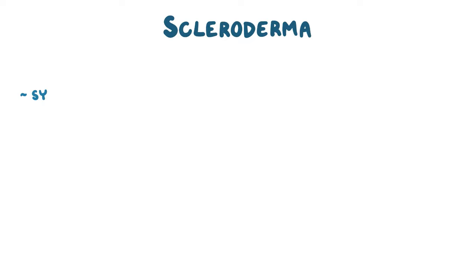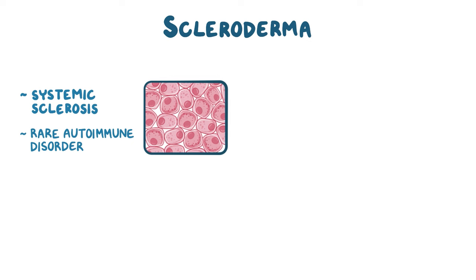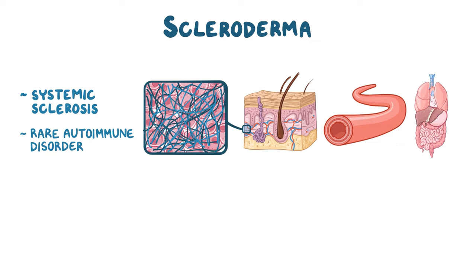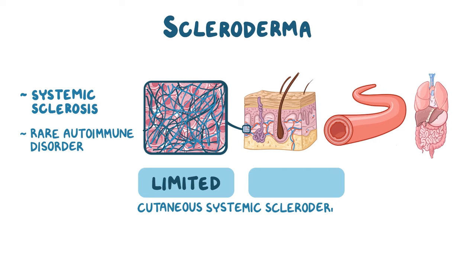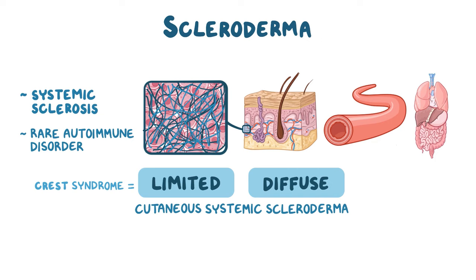Scleroderma refers to systemic sclerosis, a rare autoimmune disorder in which normal tissue is replaced with thick, dense connective tissue. It affects the skin, blood vessels, and internal organs. There are two main types of scleroderma: limited cutaneous systemic scleroderma, better known as CREST Syndrome, and diffuse cutaneous systemic scleroderma.